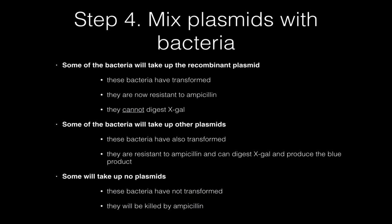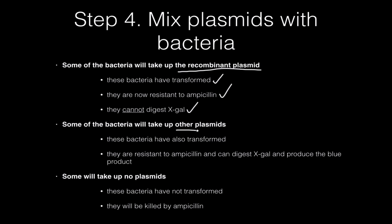Step four: mix the plasmids with your living E. coli bacteria. Under the right circumstances, some bacteria will take up the recombinant plasmid — those bacteria have transformed and are now resistant to ampicillin, but cannot digest the X-galactose because their LAC-Z gene is broken. Other bacteria will take up non-recombinant plasmids — they are ampicillin-resistant and their LAC-Z gene is intact, so they can digest X-gal and produce the blue product. Bacteria that take up no plasmids are not transformed and will die in the presence of ampicillin.